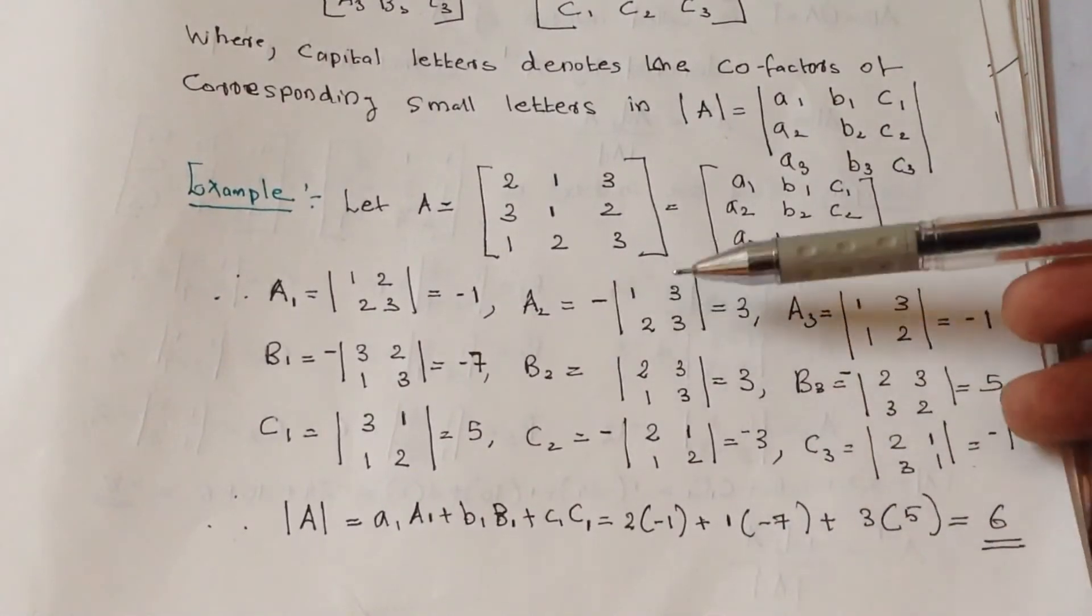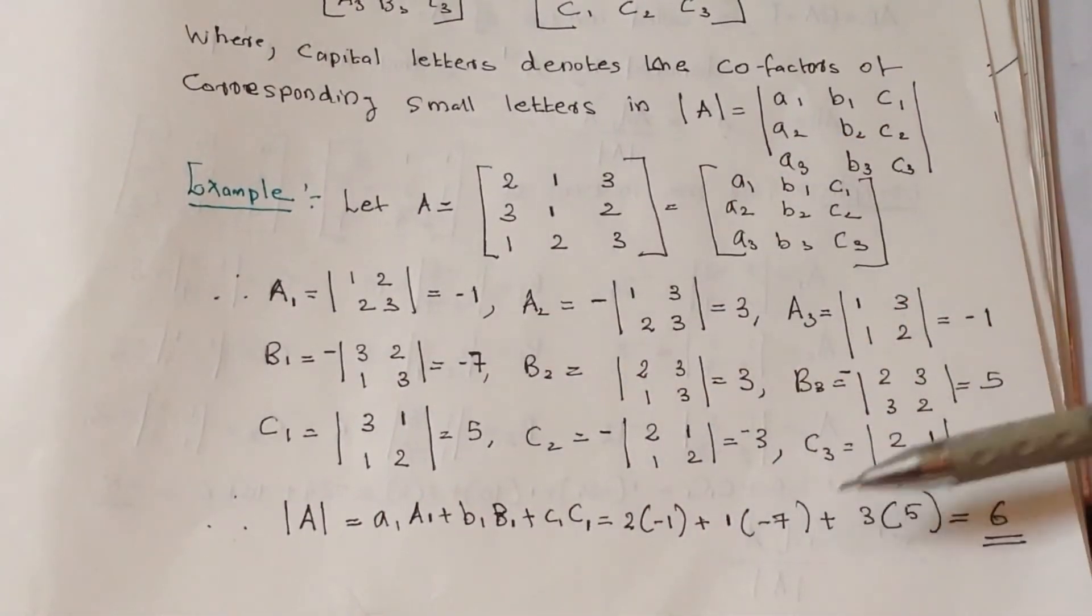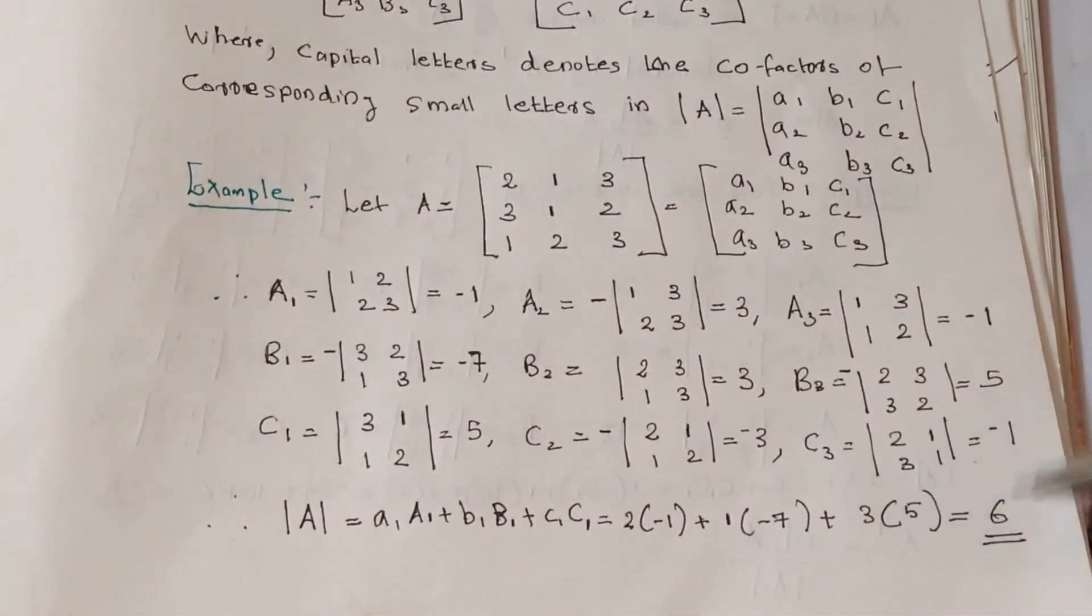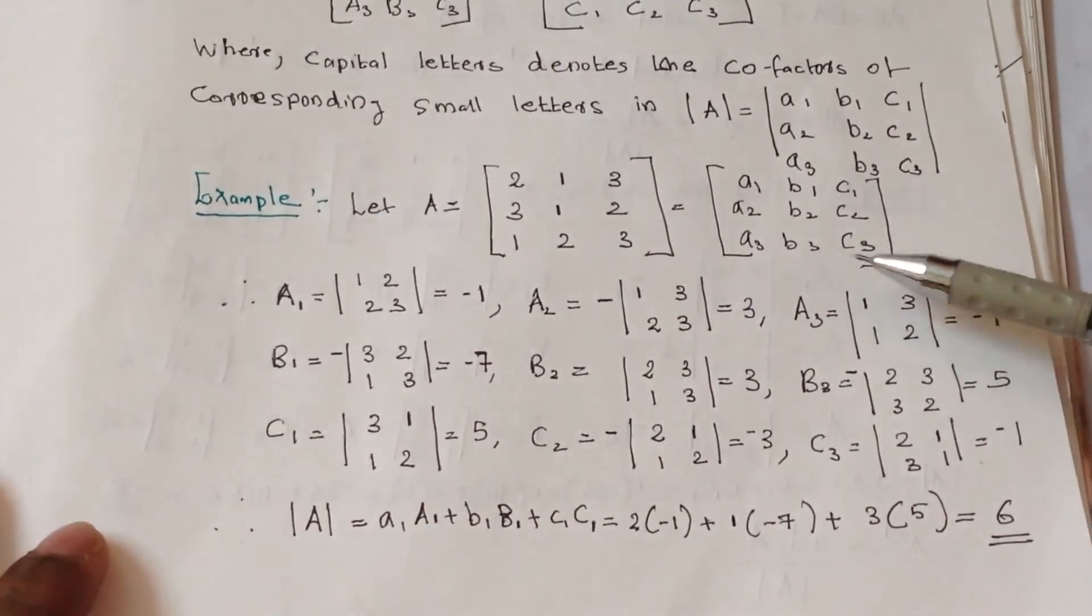What is capital B1? B1 equals minus 7, so 1 into minus 7, plus 3 into 5. The determinant will be 6.